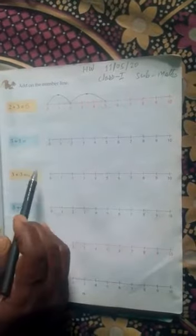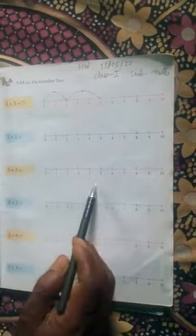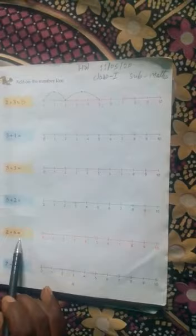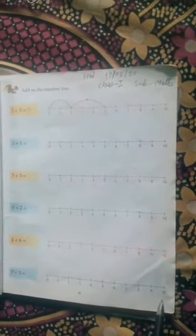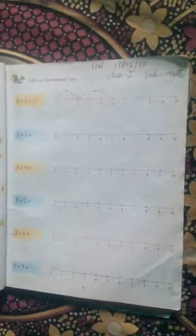Now, add on the number lines: 3 plus 1 equal to, 3 plus 3 equal to, 5 plus 2 equal to, 2 plus 6 equal to, 7 plus 3 equal to. That's all.